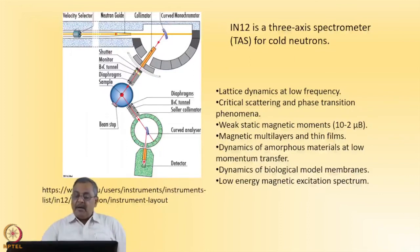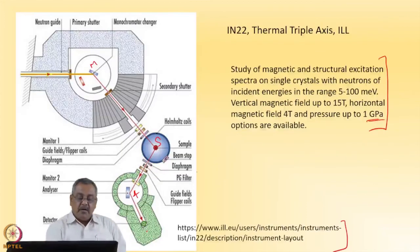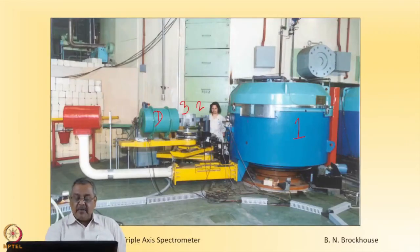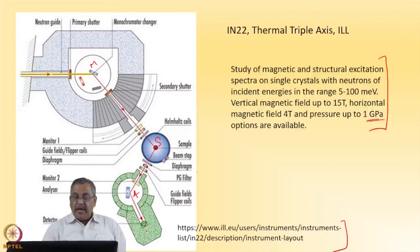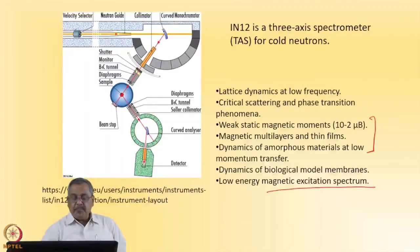You can use the cold neutrons at ILL Grenoble for studying slower dynamics, lattice dynamics at low frequency, slower dynamics, critical scattering. It has got a weak static magnetic field and it can study magnetic multilayers and thin films. Because of slower dynamics, most of the biological model membranes and their dynamics are extremely slow, or magnetic excitations like magnons can be studied using this spectrometer. But the basic structure of the instrument is the same.